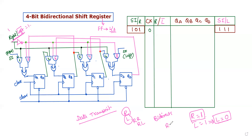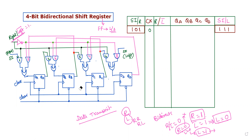If R/L-bar equals 0, then R equals 0 and L-bar equals 0, which makes L equal to 1. The right-shifting operation is disabled and we are going to perform the left-shifting operation. We enable the left shift and disable the right shift to operate the bidirectional shift register, transmitting data towards the right side or left side.